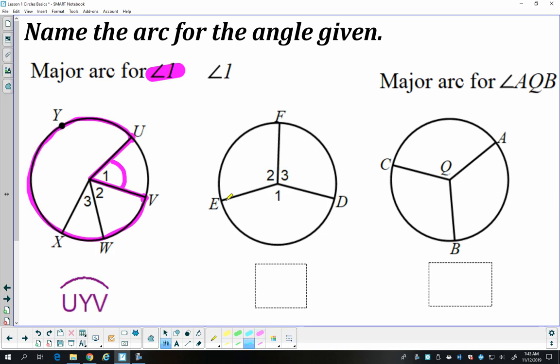So look at this one, angle 1. So not the major arc this time, just the minor arc. Angle 1 is made by those two segments, and it refers to this angle. So I'm looking at this arc right here. Starts at E, ends at D. You can name it either arc ED or arc DE. Both of them will work.